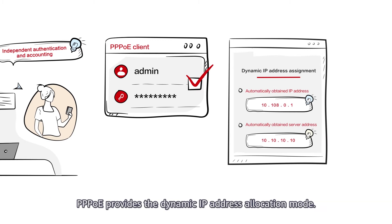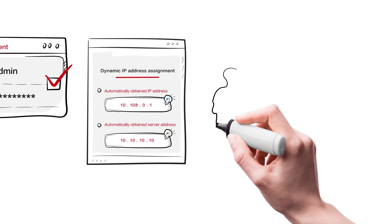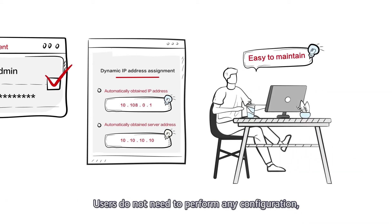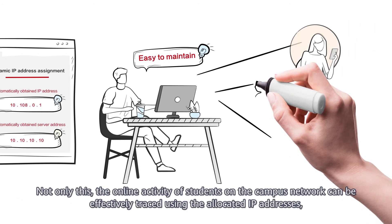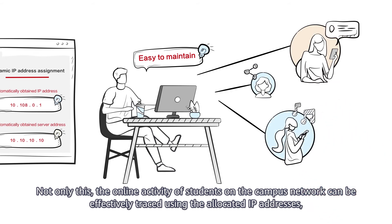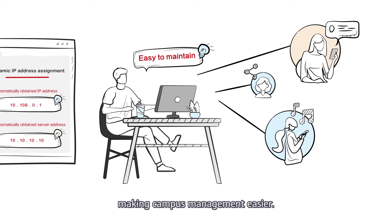PPPoE provides the dynamic IP address allocation mode. Users do not need to perform any configuration, and it is easy to maintain the network using campus NMS. Not only this, the online activity of students on the campus network can be effectively traced using the allocated IP addresses, making campus management easier.